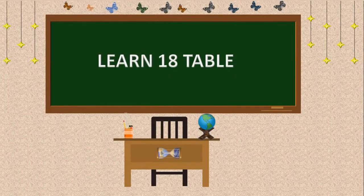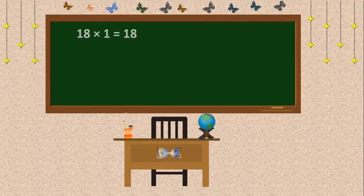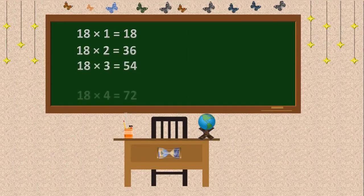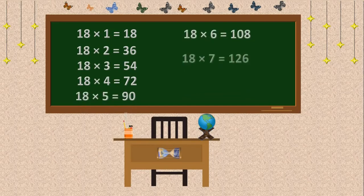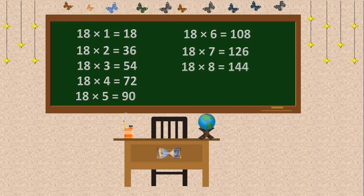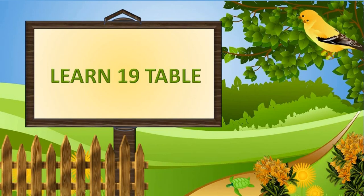18 table. 18 times 1 is 18. 18 times 2 is 36. 18 times 3 is 54. 18 times 4 is 72. 18 times 5 is 90. 18 times 6 is 108. 18 times 7 is 126. 18 times 8 is 144. 18 times 9 is 162. 18 times 10 is 180.